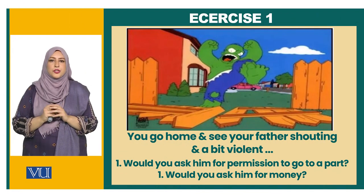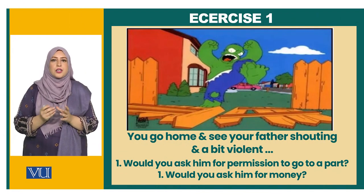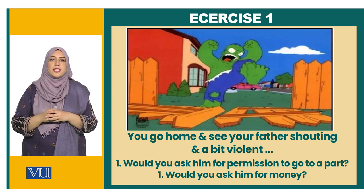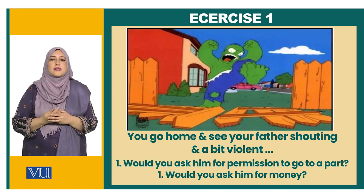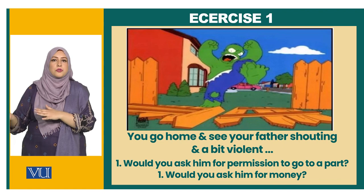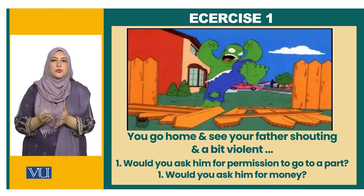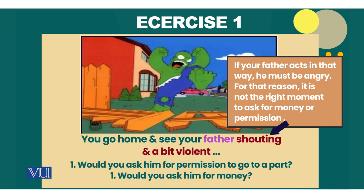Here is an exercise for you. Imagine that your father is screaming and he is violent — will you be able to ask him for permission to go out to a party, or will you be able to ask money from him? What we can infer is that if a person is violent and screaming, it means that person is angry, and it is not a wise or appropriate moment to ask to go to a party or to ask for money from your father.